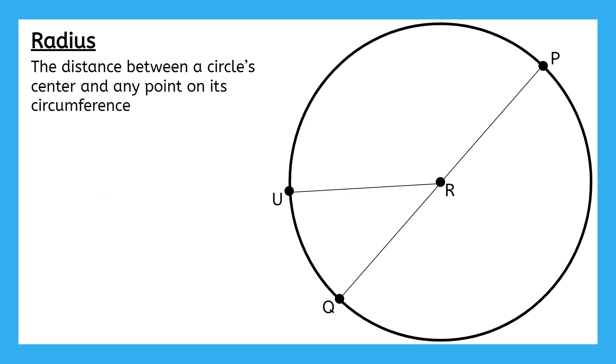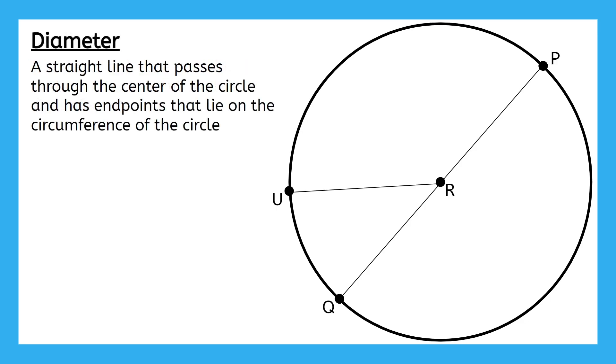Our circle now has three radii drawn in, and since two of them, RP and RQ, form a straight line segment, this leads us into our next term, a diameter. We can say that segment QP is a diameter because it has endpoints on the circle and it passes through the center of the circle.